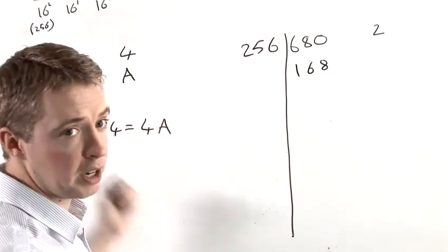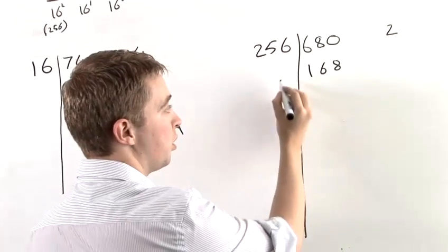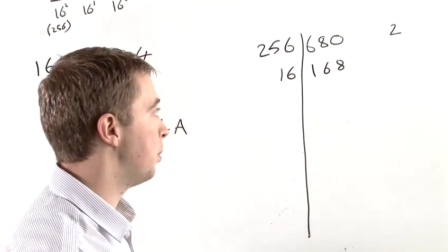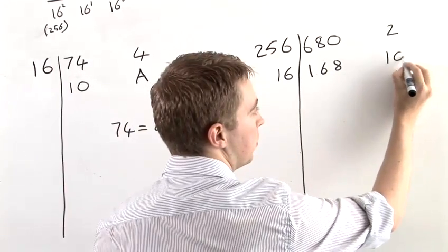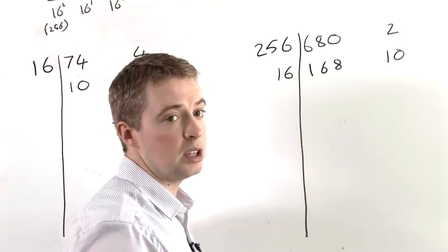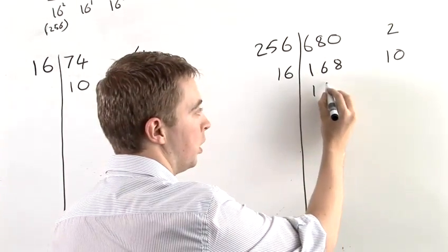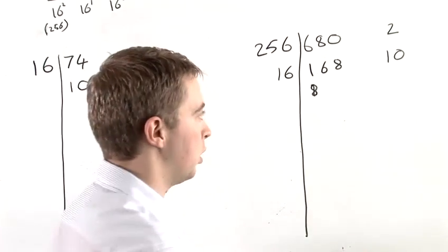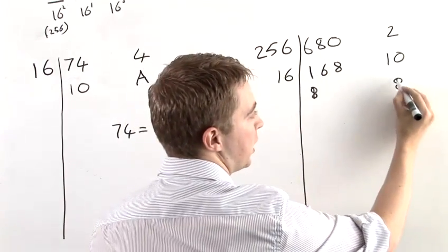Next, we now go back to what we did in the first example, and we're going to divide 168 by 16. The result of this is 10. 10 times 16 is 160, and so we're left with a remainder of 8, and so we're going to put 8 here.